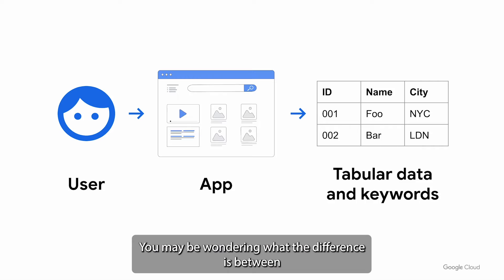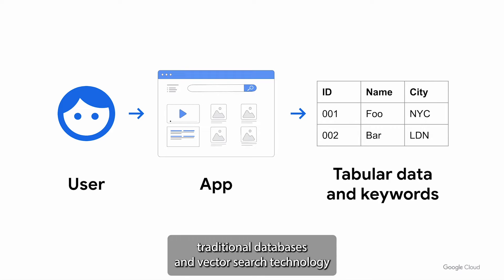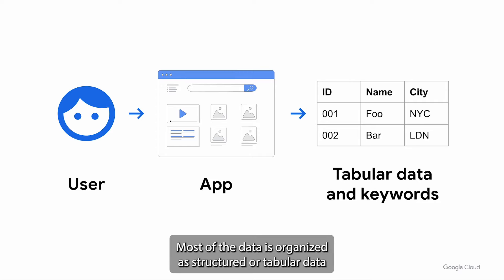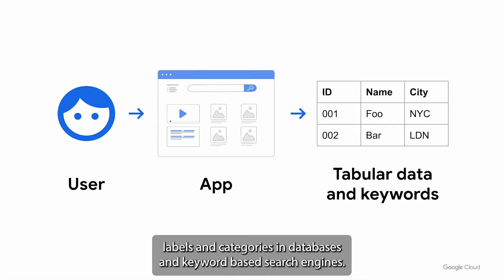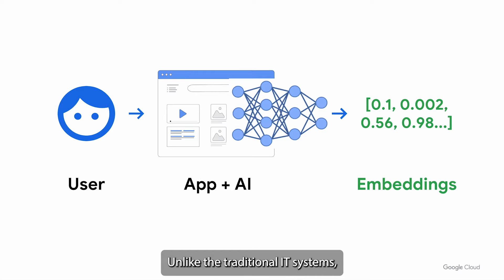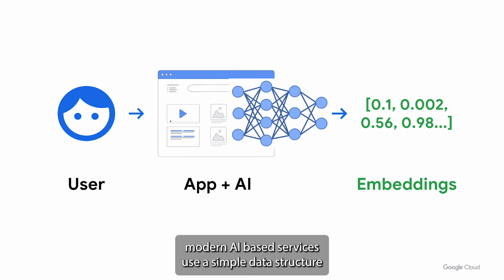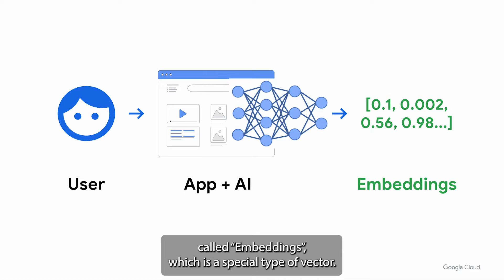You may be wondering what the difference is between traditional databases and vector search technology. In traditional IT systems, most data is organized as structured or tabular data using simple keywords, labels, and categories in databases and keyword-based search engines. Unlike traditional IT systems, modern AI-based services use a simple data structure called embedding, which is a special type of vector.